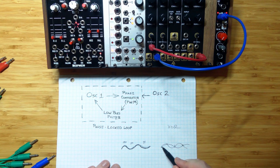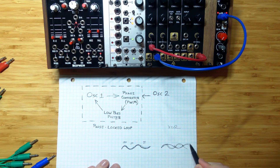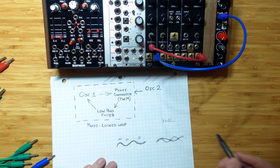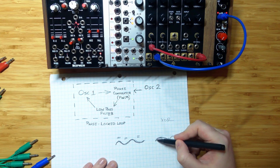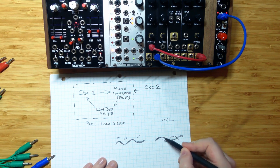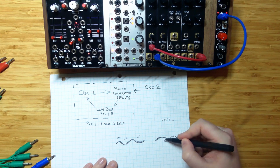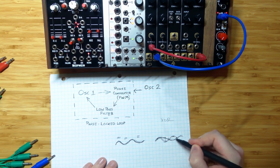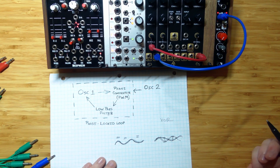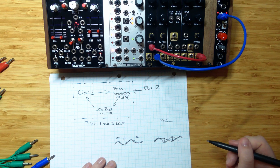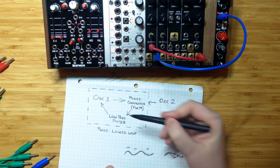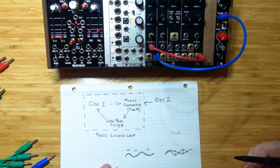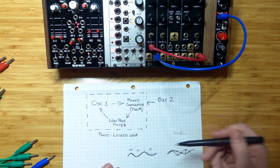When the two signals are out of phase — even at different frequencies — if you compare the two waveforms at any given point in time, you'll have a difference between them. And that difference is the voltage that we're applying to our oscillator to move it up and down.